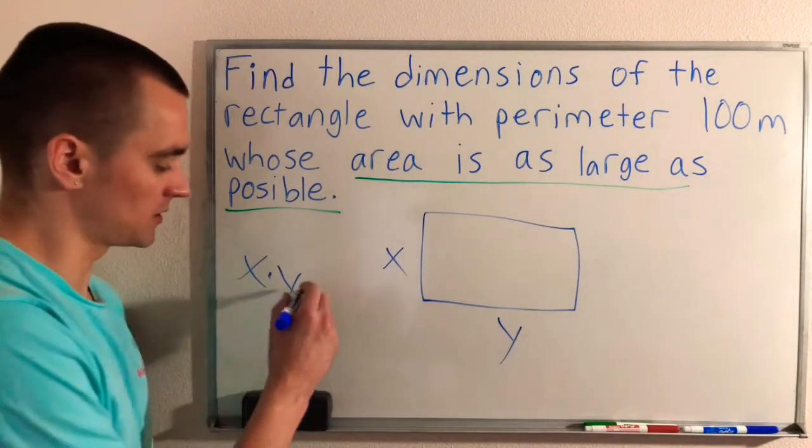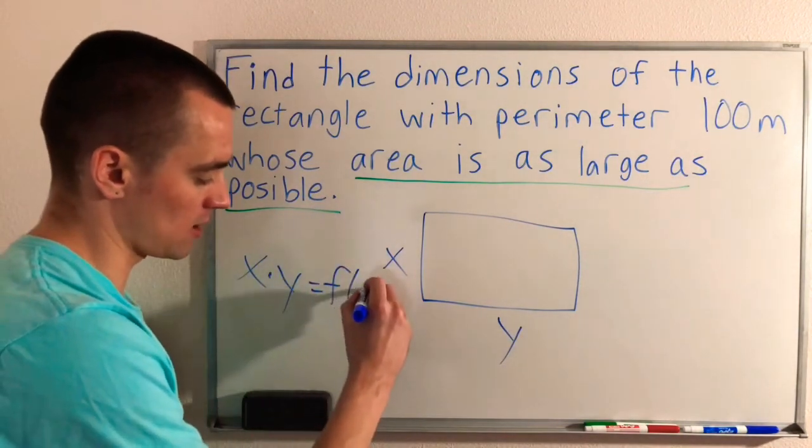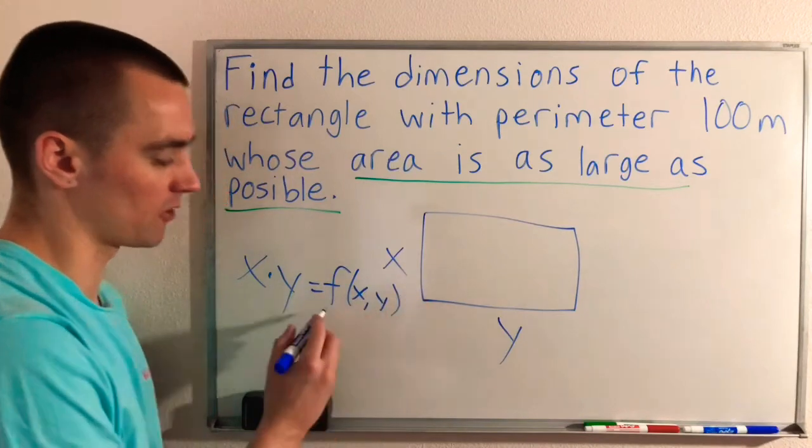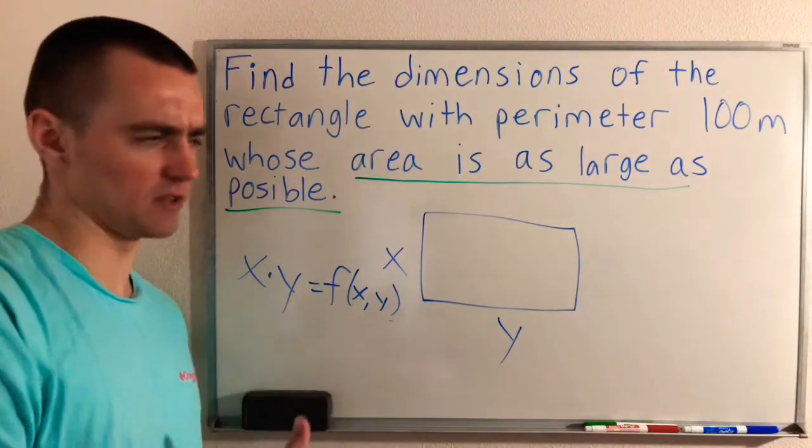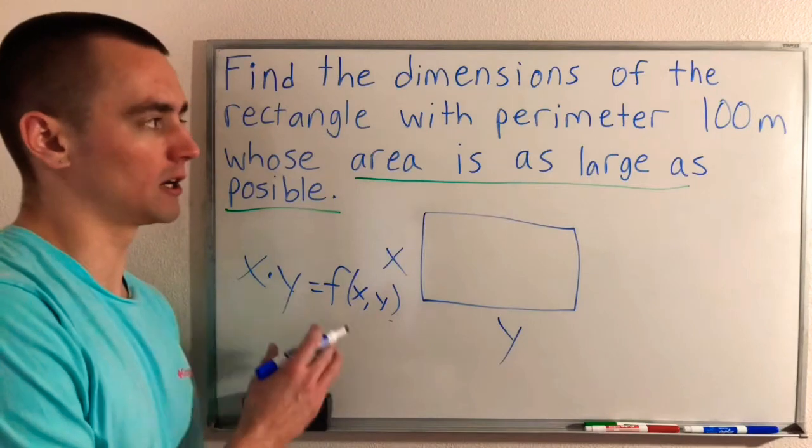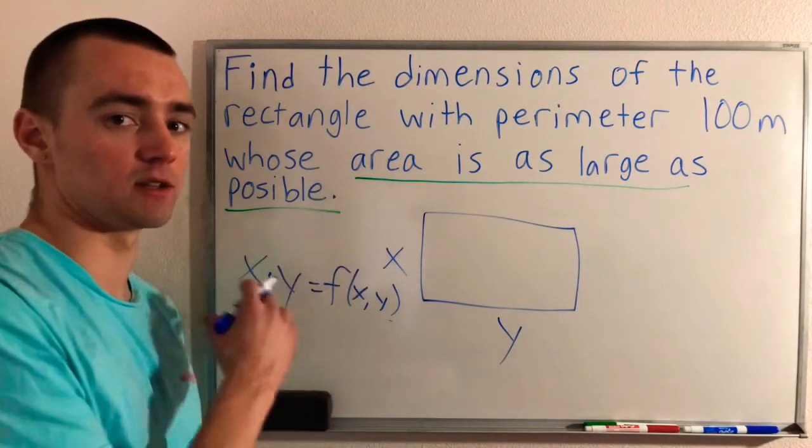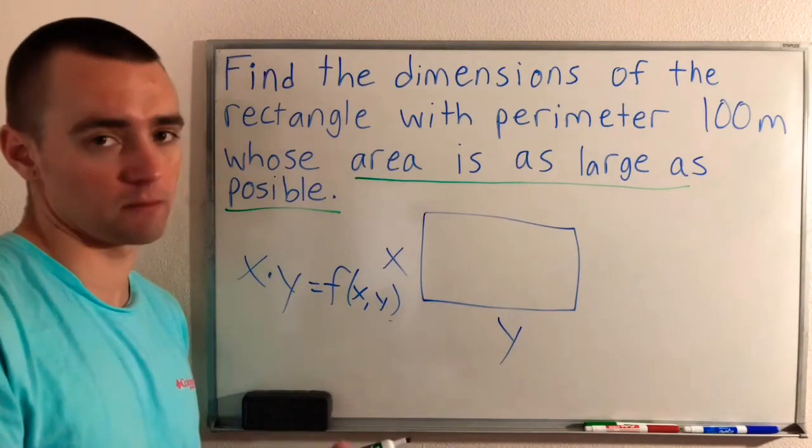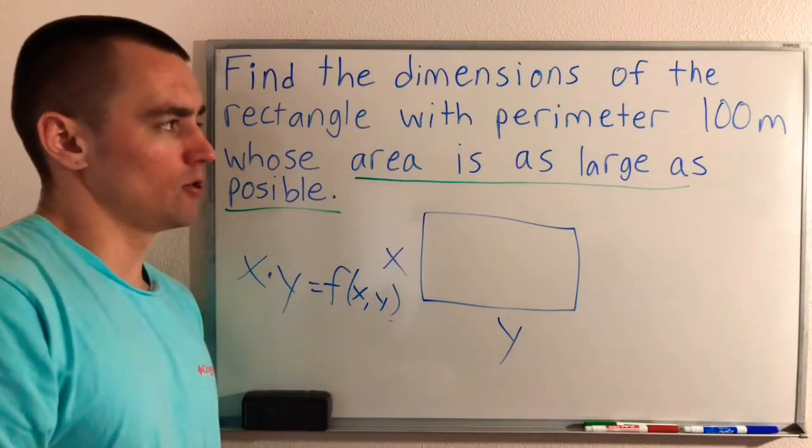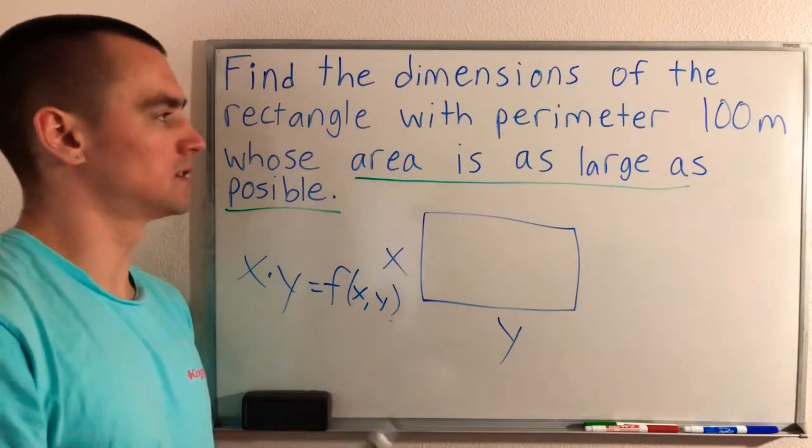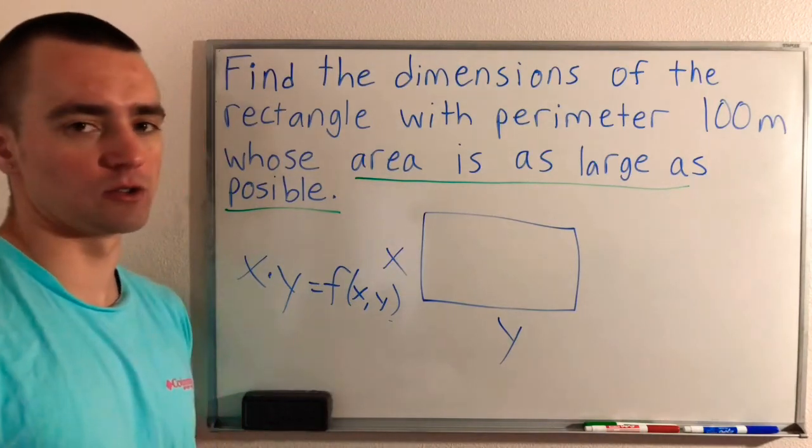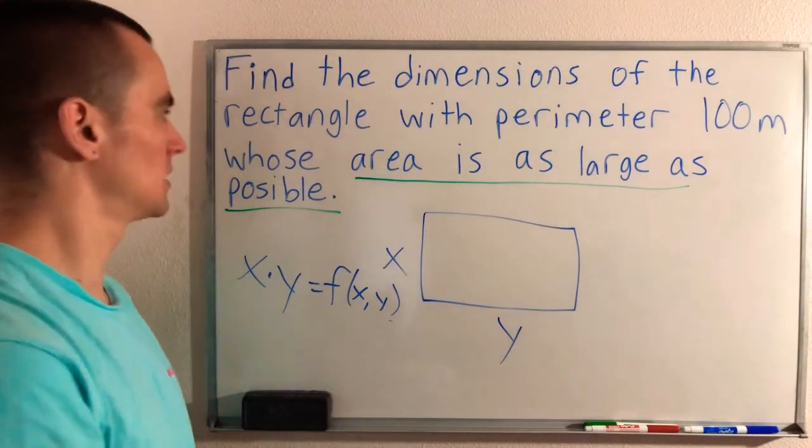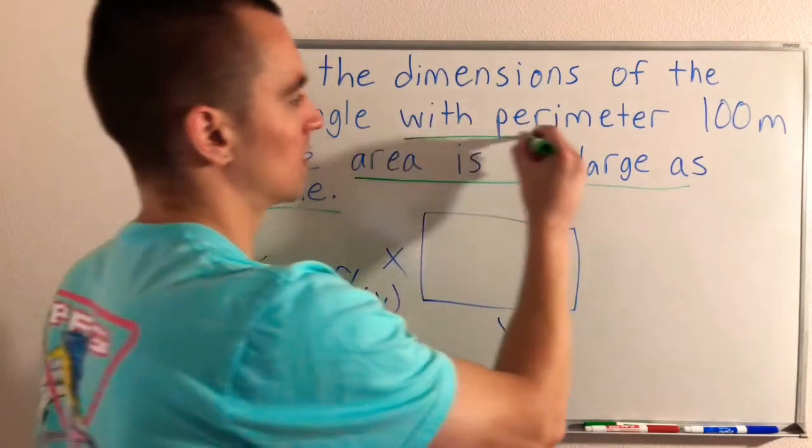So this is the function that we're trying to make as large as possible. So let's just call this function F of X, Y, which basically just means it's a function of X and Y. It's a multivariable function, but what we're going to do is use our restriction to make this into a single variable function so that it's easier to optimize or easier to find the maximum of. And how you would do that is by considering the information that they told you about this rectangle, which is that the perimeter is 100 meters.